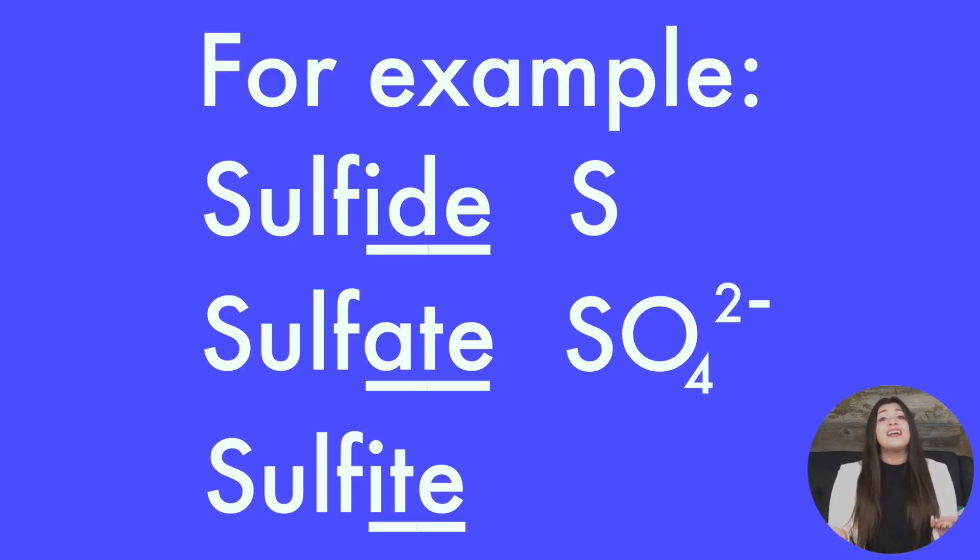Sulfite ends in "-ite," making it yet again another polyatomic atom, which is SO3 with a 2- charge.